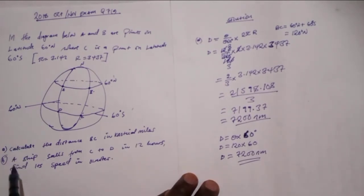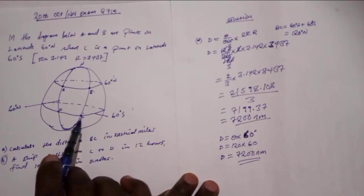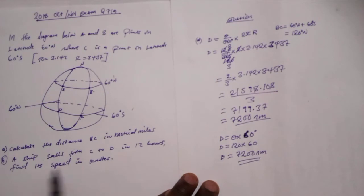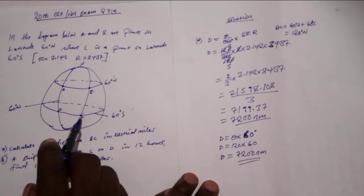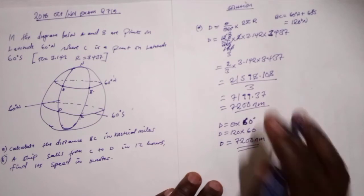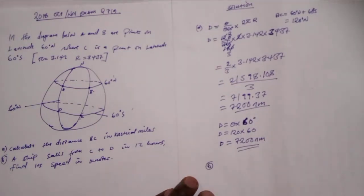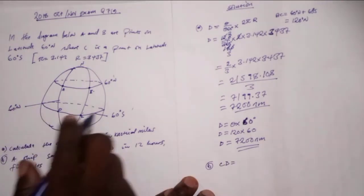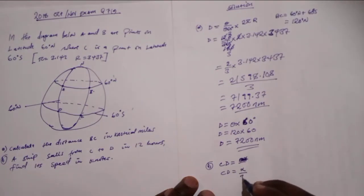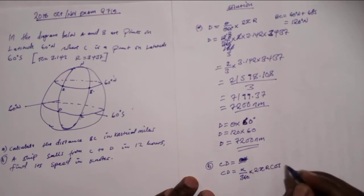For B, we are told a ship sails from C to D in 12 hours. Find its speed in nautical miles. If you can see here, we don't have the distance, so what we should do, we have to find the distance CD. By finding the distance for CD, because this distance is along the latitude, the formula will be alpha over 360 multiplied by 2πr cos theta.